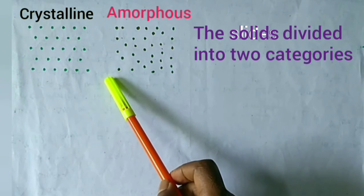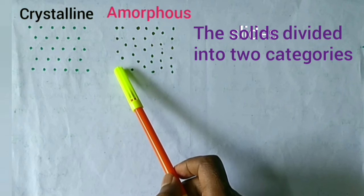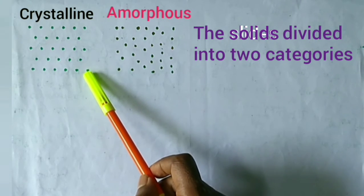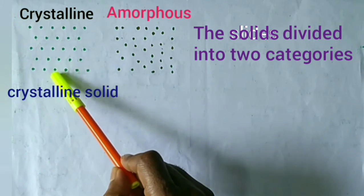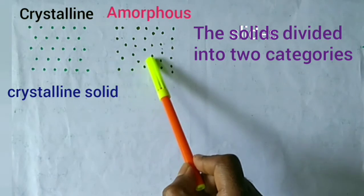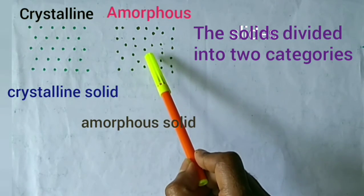And so, the solids divided into two categories. One of them is called crystalline solid and other is called amorphous solid.